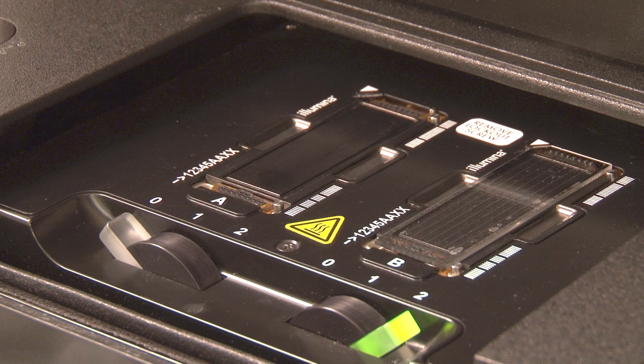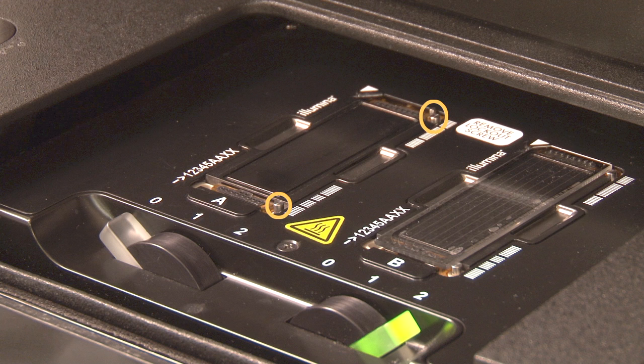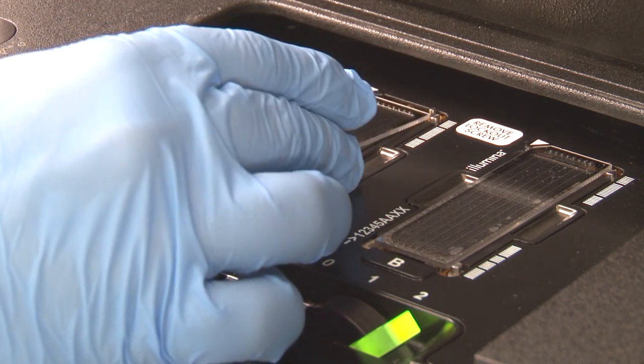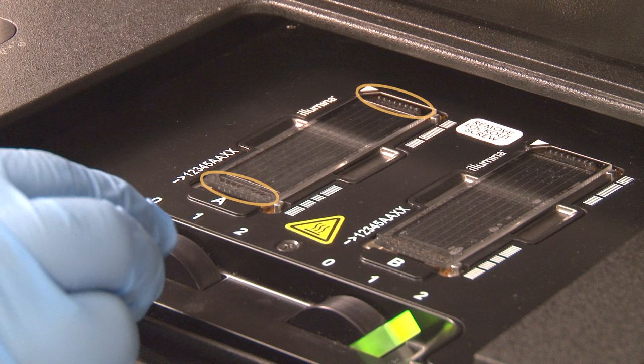When loading a flow cell onto the Hi-Seq, make sure to register the flow cell against the guide pins in the back right of the flow cell holder. Visually make sure that the inlets and outlets of the flow cell are positioned above the inlet and outlet gasket opening. Some minor position adjustments may be made to the flow cell to ensure proper alignment with the gaskets and proper flow.